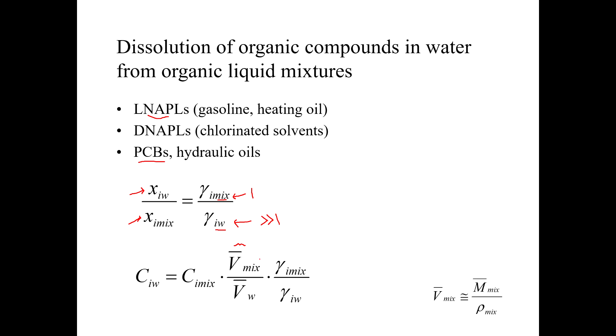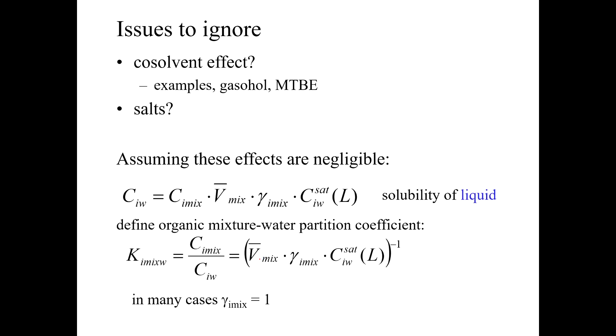So if we do that, we can start to make some assumptions about what's going on here. To make a mathematical construct here, we have to make a couple of assumptions. One is we have to just ignore the co-solvent effect. Remember how we talked about co-solvents? And one of the examples we gave was when you have gasoline or vehicle fuel that has a lot of ethanol in it, has a high ethanol content.